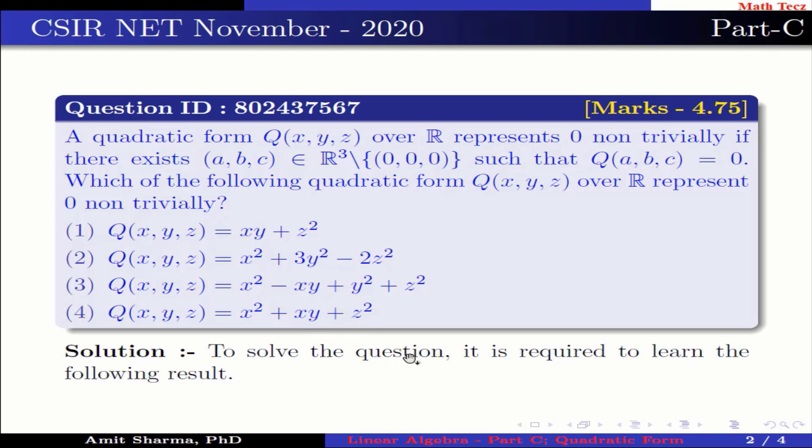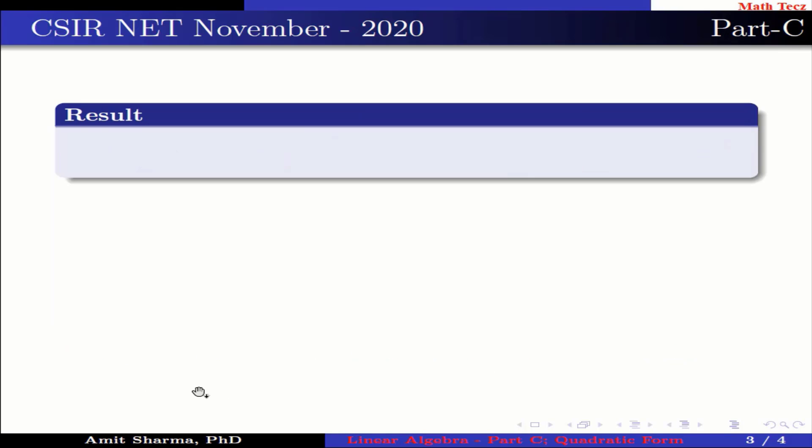To solve the question, it is required to learn the following result. An expression Q in n variables is called a quadratic form if it is a homogeneous expression of degree 2.